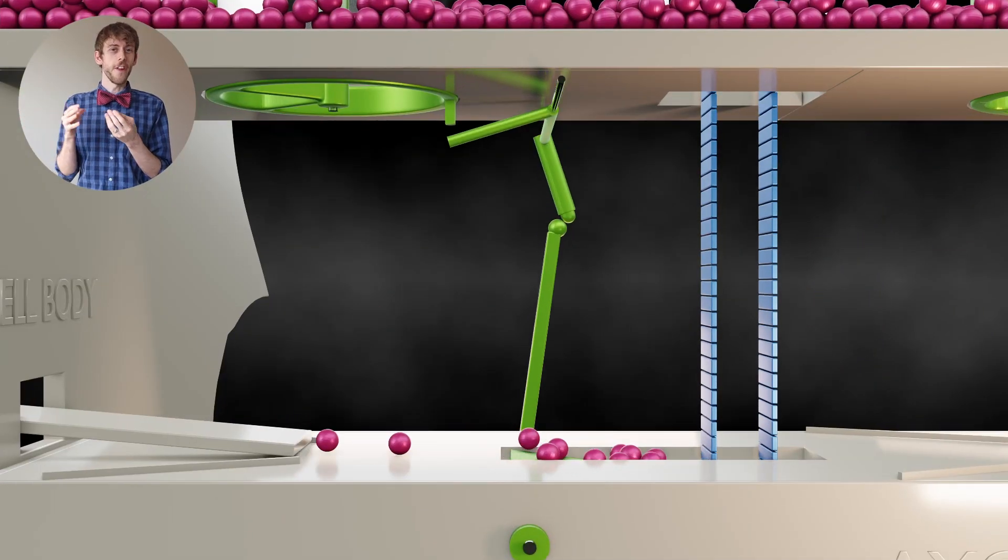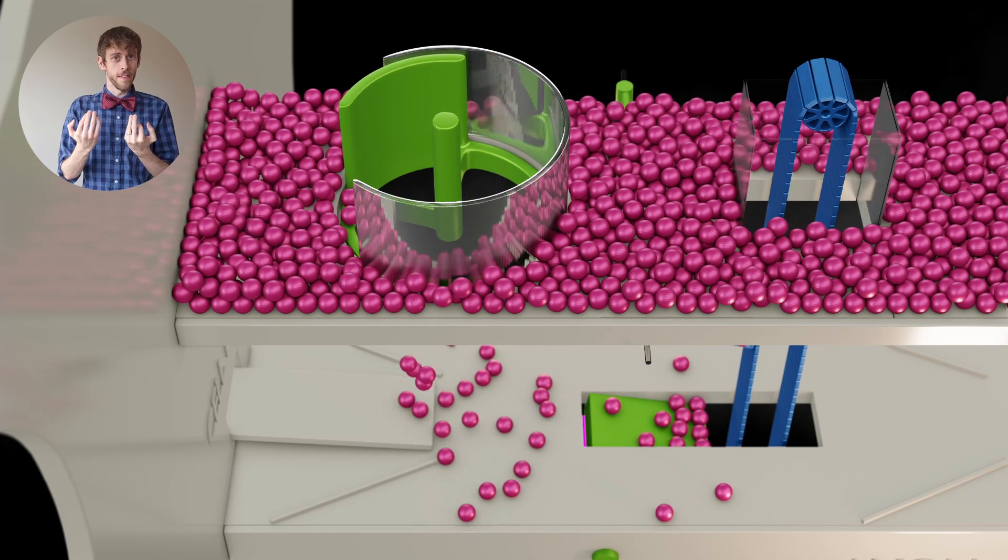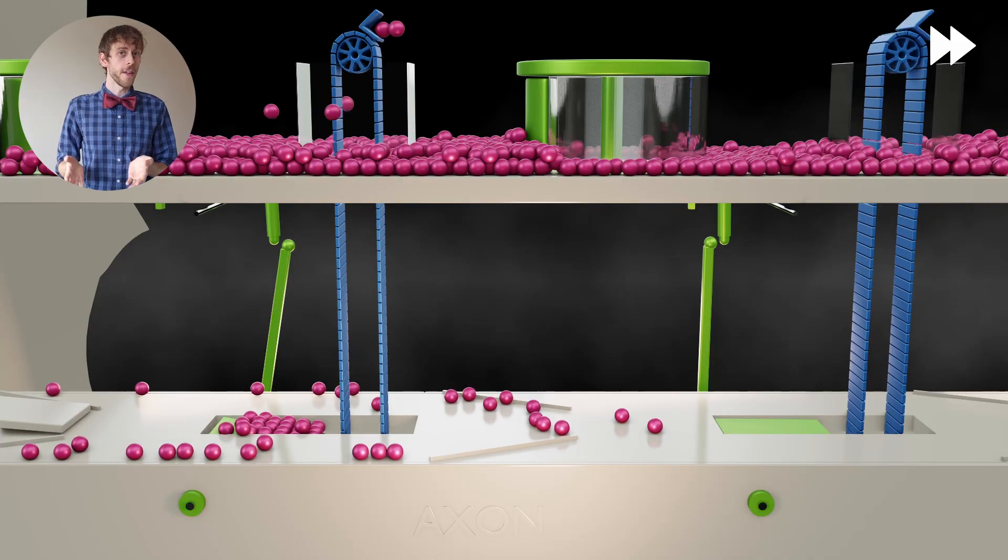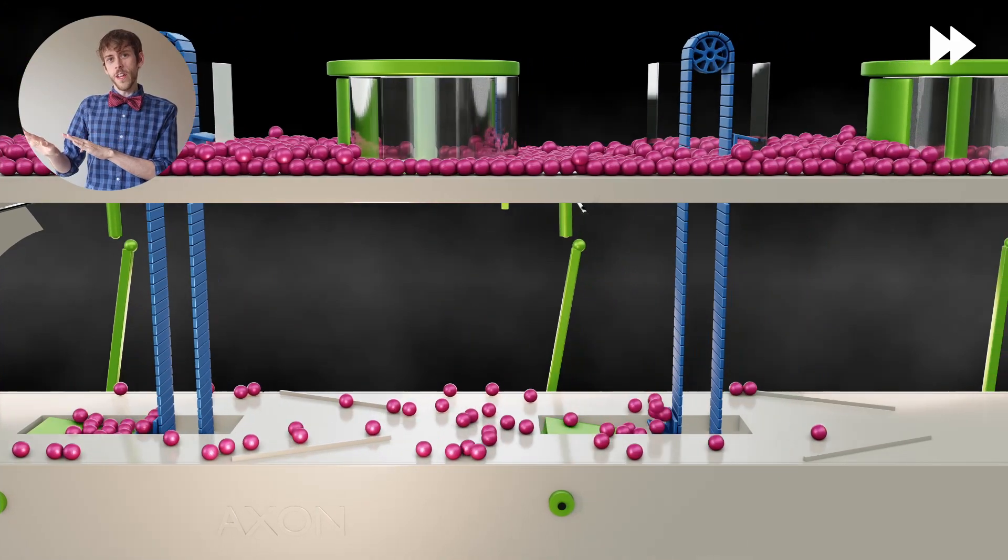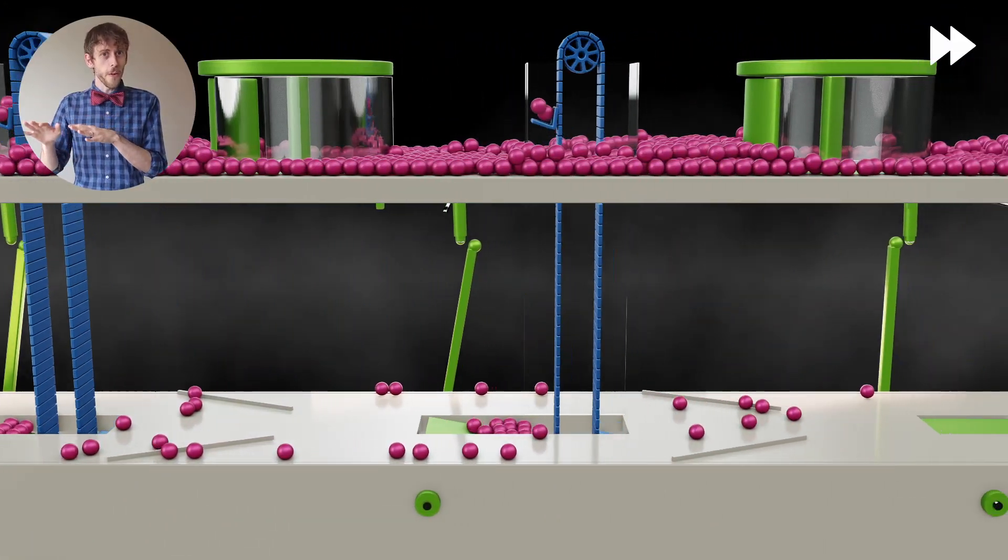So the cell puts out a few marbles. If there's enough of them, they can trigger a channel to open and more marbles pour in and are immediately pumped back out by the elevators. But a few reach the next section where they trigger the next channel and more marbles pour in and they spread further and so on.